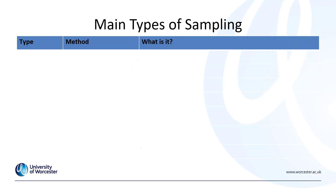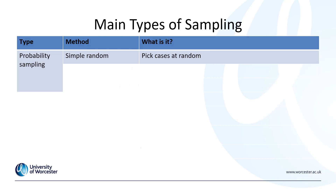Here is a breakdown of the main types of sampling. First, we have probability sampling, and there are three methods. Simple random sampling: you have a list — a sampling frame — of the entire population, and then you pick cases at random from that list. Often a random number generator might be used. So you have the list, and then you pick randomly cases and respondents off that list.